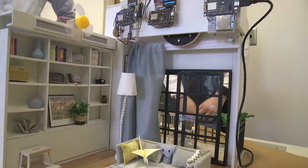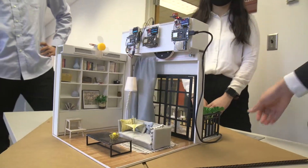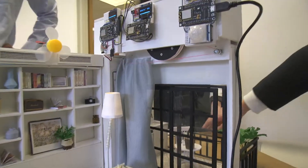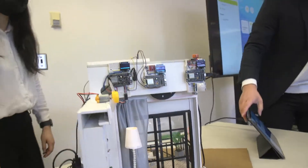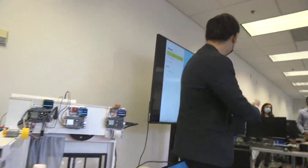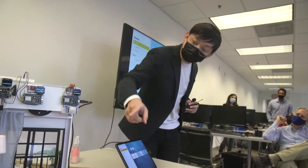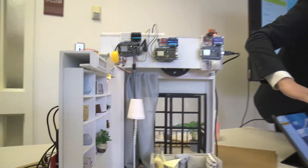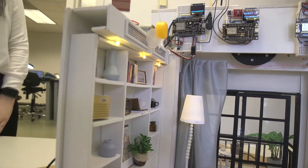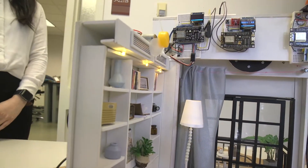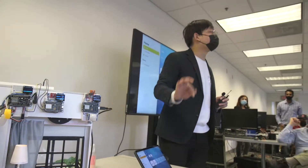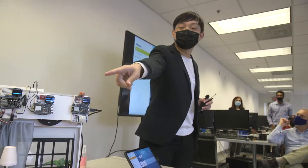I can manually turn on the other three lights — if you can see, I can rotate that a little bit. On the interface, I can turn on the light and each light will turn on individually. That's basically how we manually turn the lights on and off.